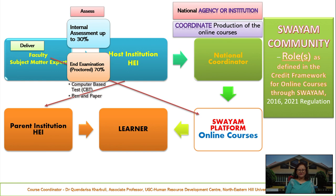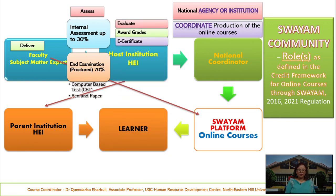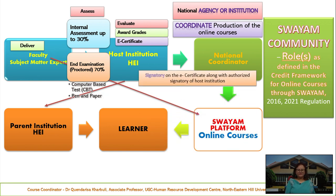If it is a pen-and-paper examination, the host institution along with the course coordinator will have to identify institutions close to the learner where they can complete it. On completion of the examination, the host institution along with the course coordinator will prepare a score sheet after evaluation and award grades to the learner. If the learner attains the minimum pass score — for example, 40% — an e-certification will be awarded.